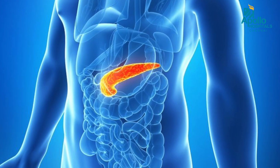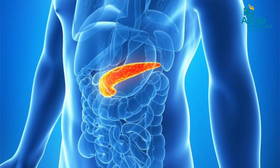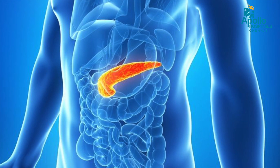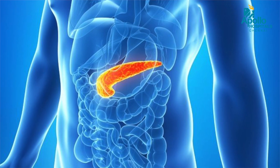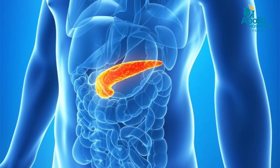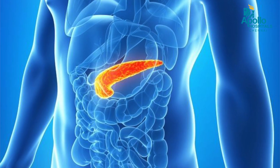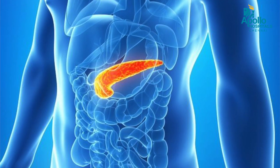To begin with, what is the pancreas? The pancreas is an organ with a leaf-like structure. It starts from the right side of the abdomen, crosses the midline, and goes to the left side.